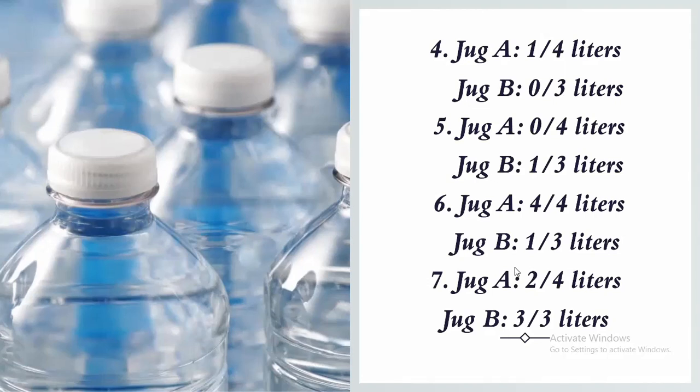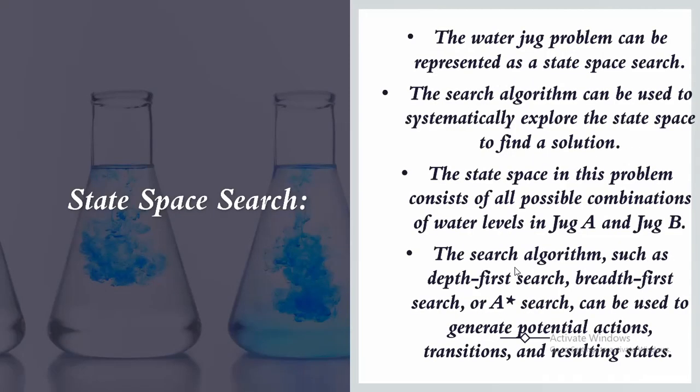In the fifth step, pour the water from jug A into jug B again. Then sixth, fill jug A again with water from the supply. And in the last step, pour the water from jug A into jug B until jug B is full. At this point we have exactly two liters of water in jug A, which is the desired amount we need to measure.